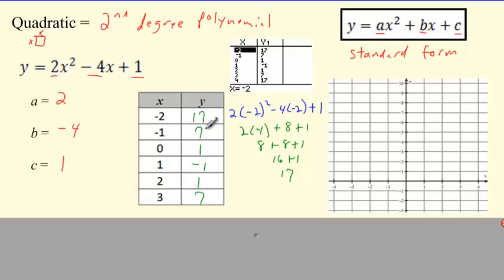If I scroll up, negative two makes seventeen. It gives me all my values. Negative one makes seven, zero makes one, one makes negative one, two makes one, three makes seven. These are all points on my graph. I'm going to graph this. Negative one makes seven, zero makes one, one makes negative one, two makes one, three makes seven. This is actually what quadratics look like. They come down from up here, then come back up. This shape is called a parabola.